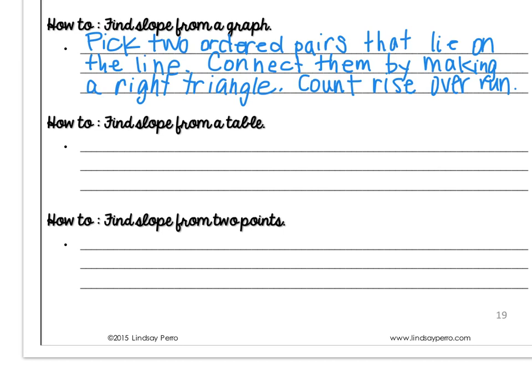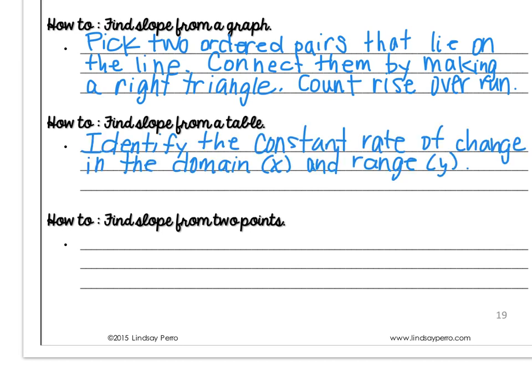To find the slope from a table, you're going to identify the constant rate of change in the domain, or your x values, and the range, the y values. Remember, though, to write your slope as the change in y over the change in x, or rise over run.